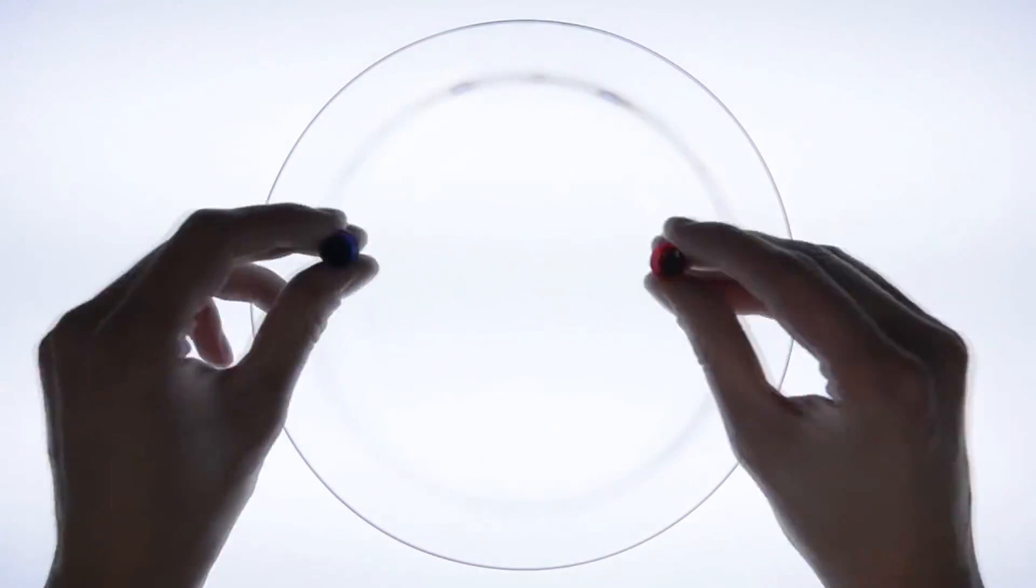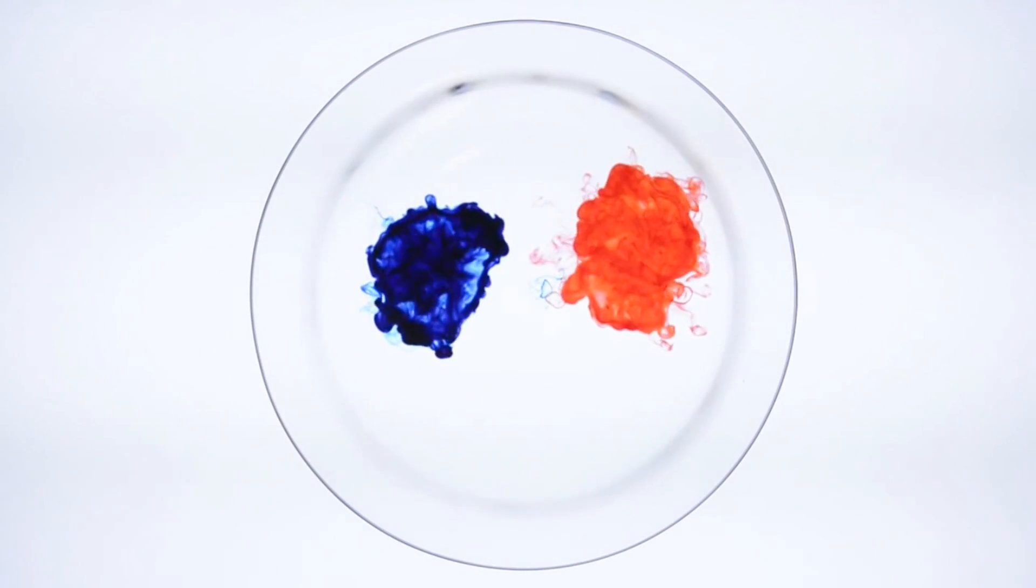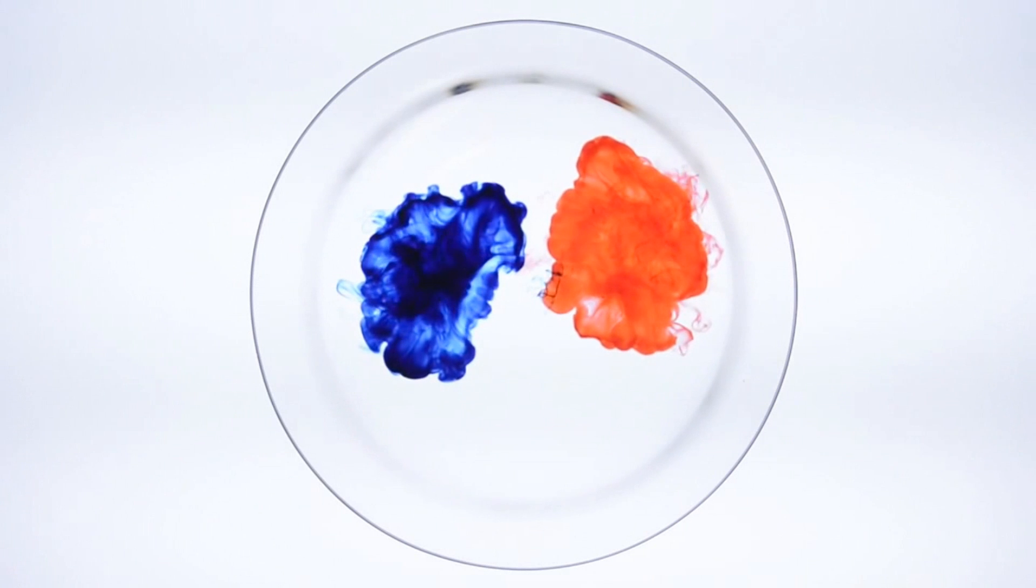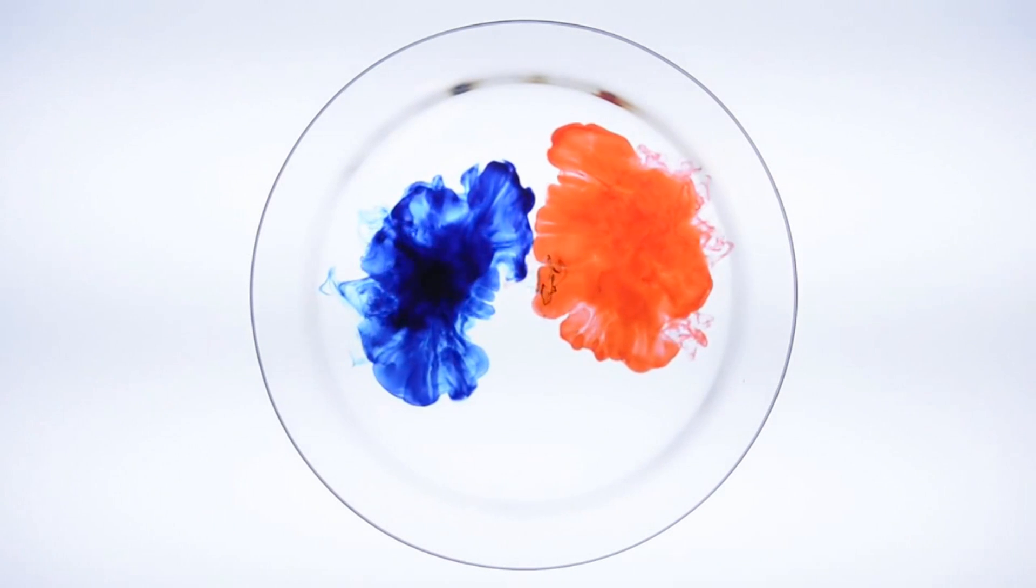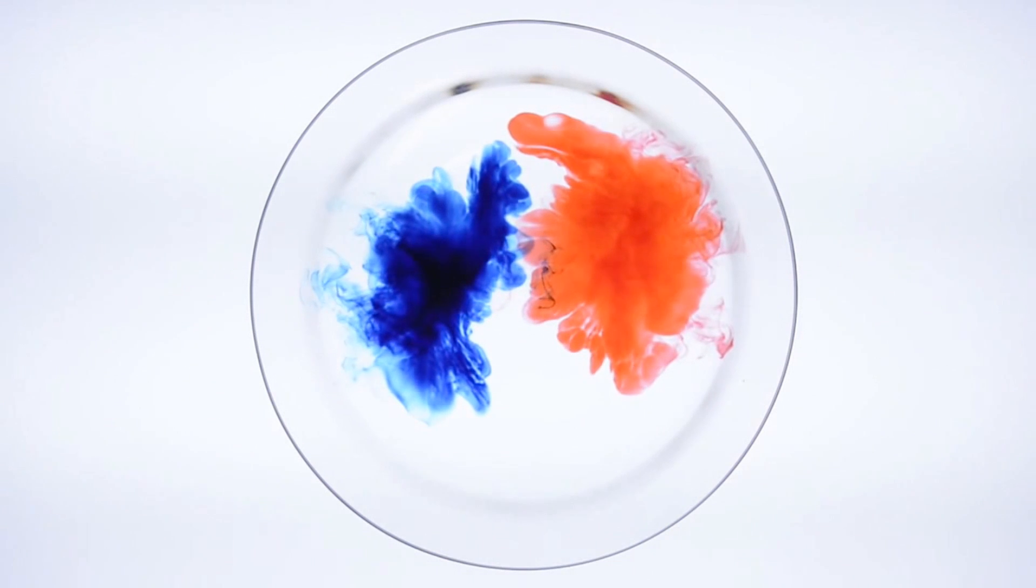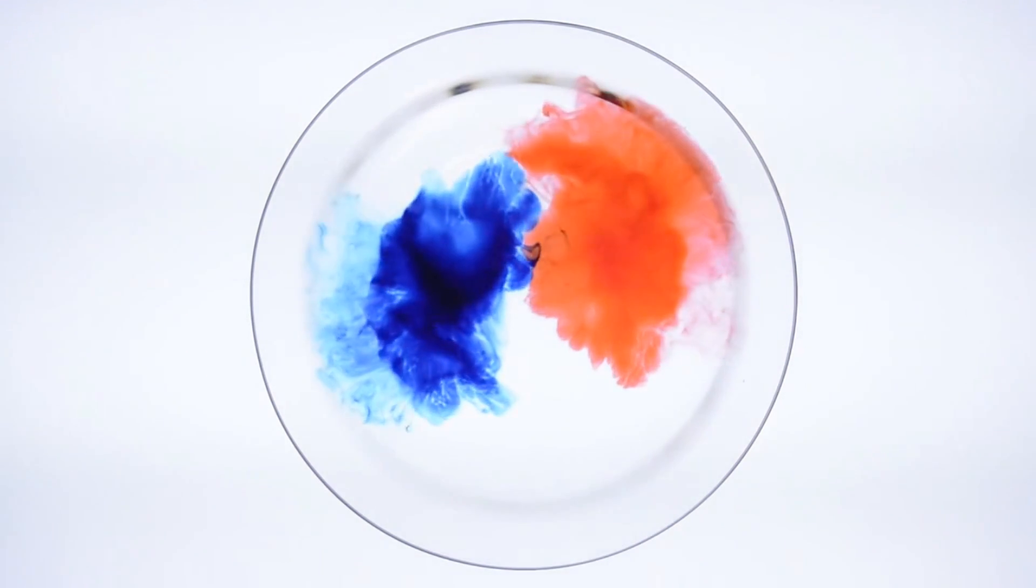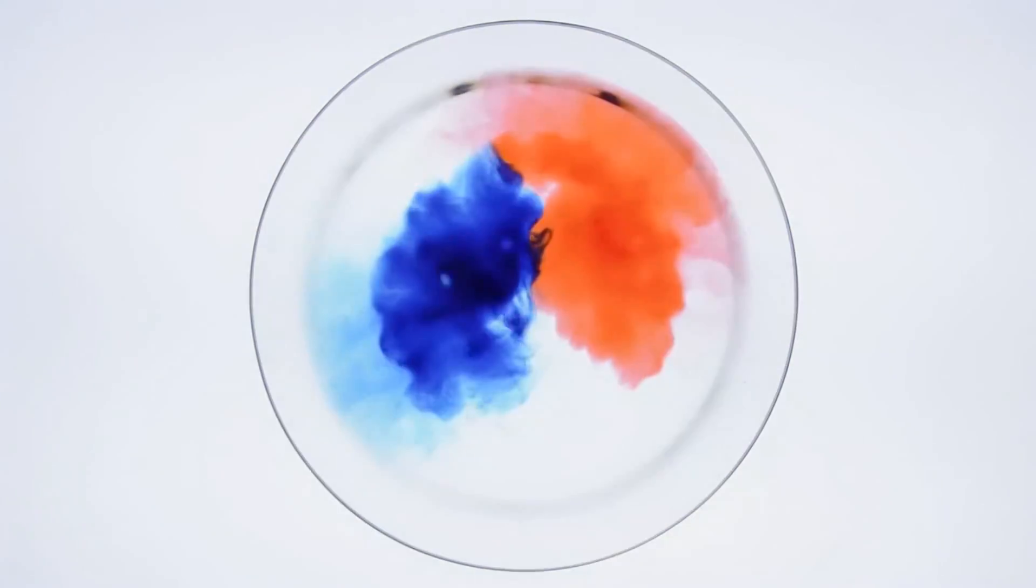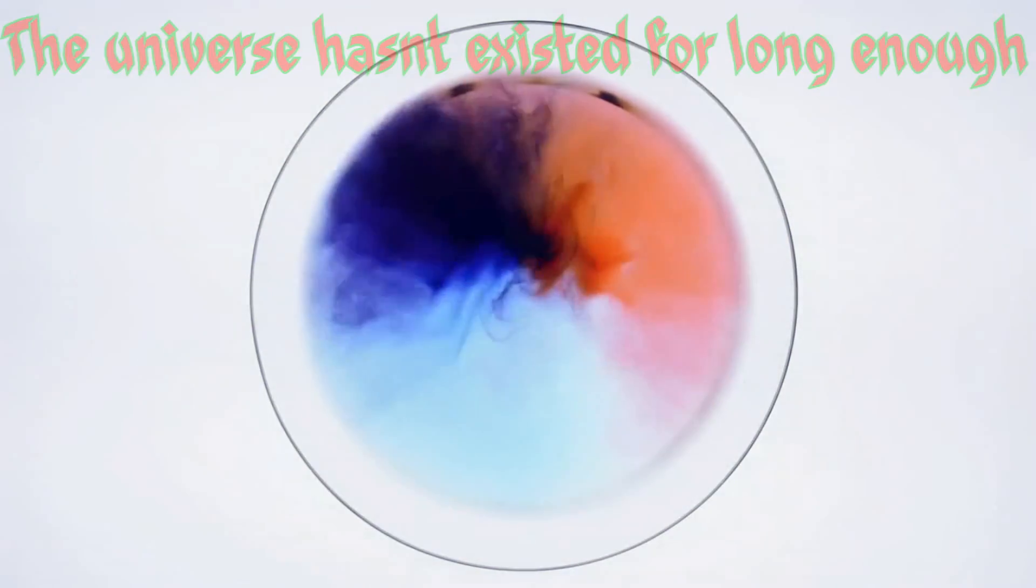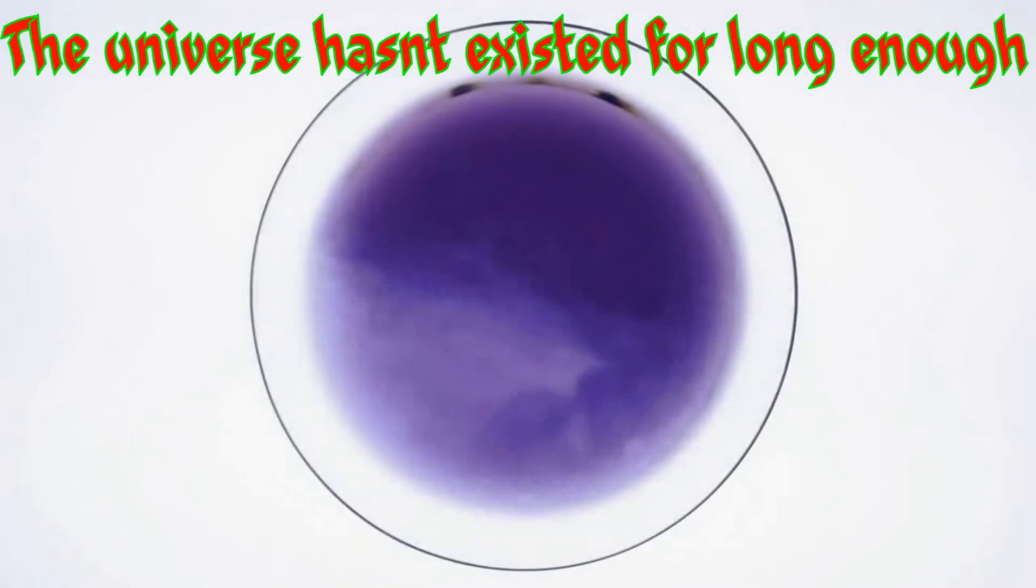If you take two drops of food coloring and put them both in water at different points, the food coloring will expand out from there. It takes time for them to mix. If one drop is red and the other is blue, they need to come in contact with each other before they can mix and turn purple. And that's basically the problem. The universe hasn't existed for long enough for one side to be in contact with the other in order to reach this state of uniformity.